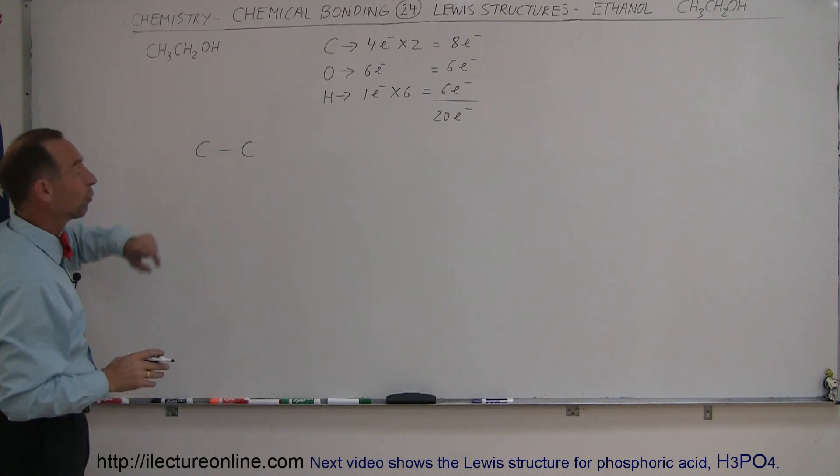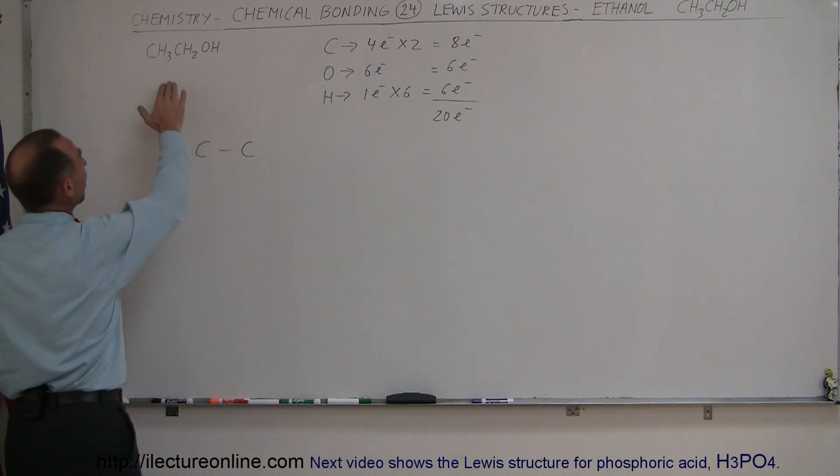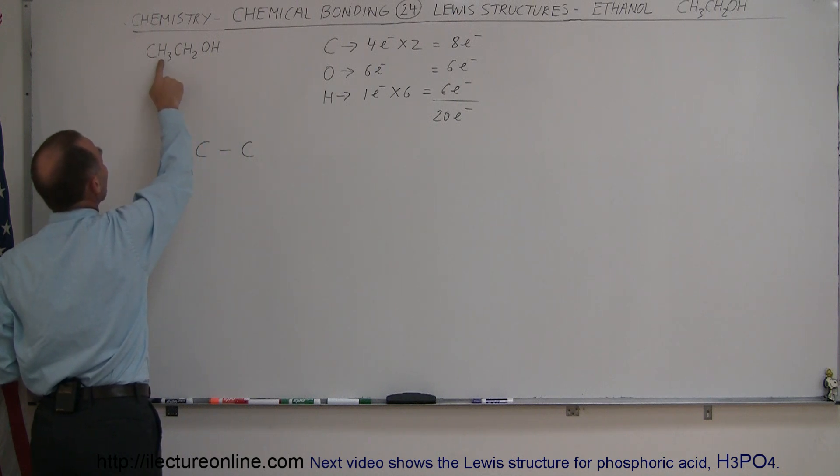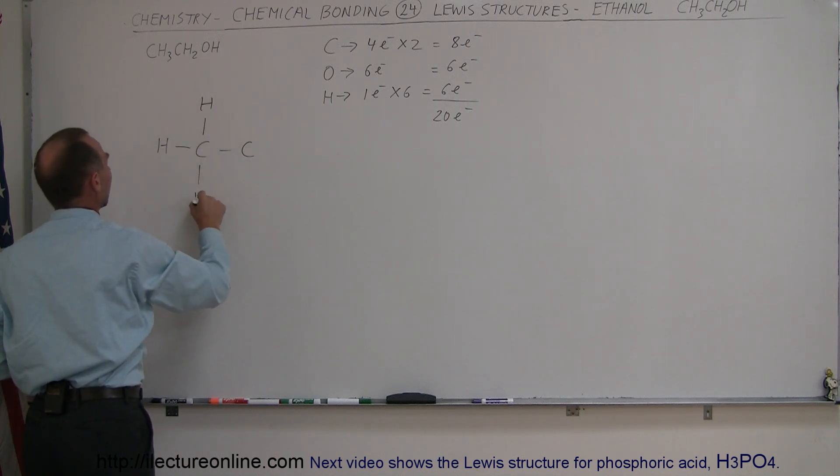We know that carbons can form four bonds. Notice how the molecule is written—this indicates that there would be three hydrogens connected to this carbon. So let's draw it like that: a hydrogen here, a hydrogen there, and a hydrogen there.